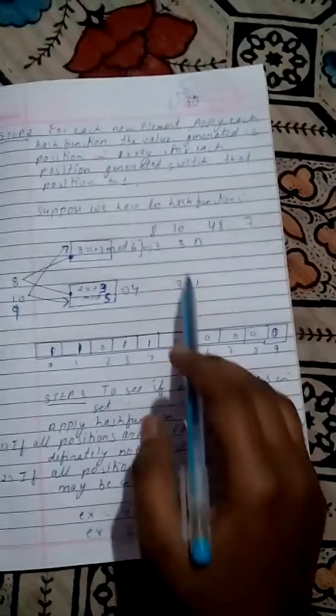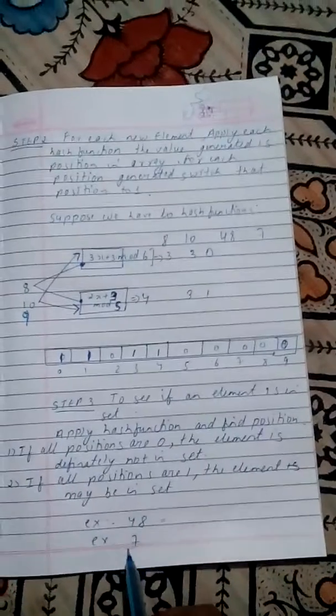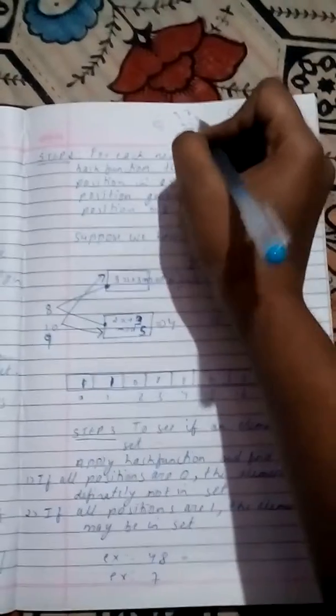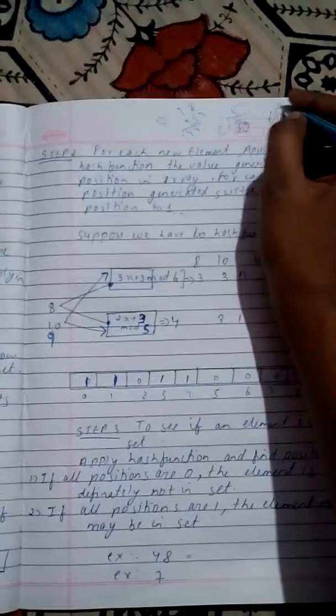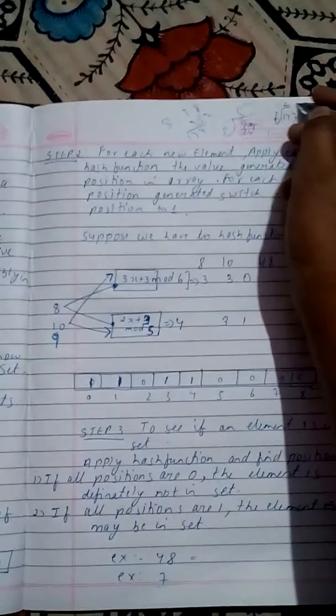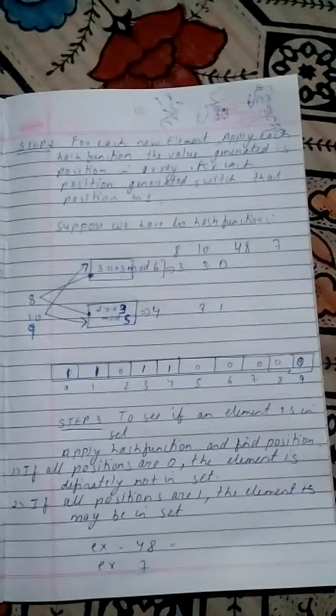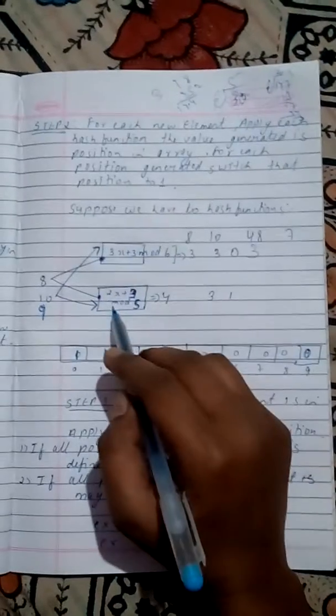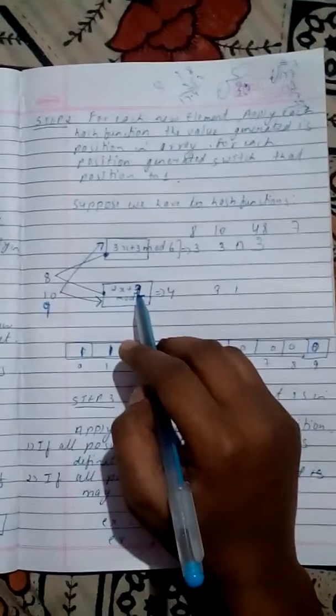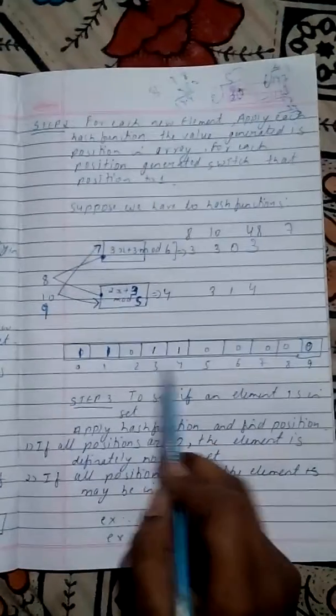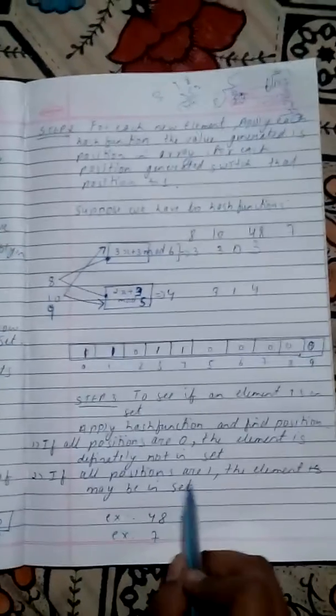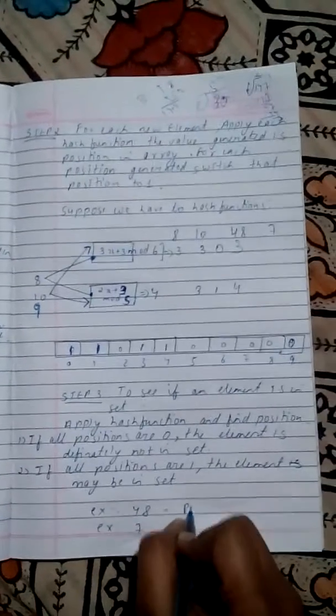Now I will tell you why we have taken 48 and 7. For 48, 3 times 48, that is 144. 144 plus 3 is 147. 147 divided by 6, we get 3. And 2 times 48 is 96, 96 plus 3 is 99. 99 mod 5 is 4. So 3, 4. 3 and 4 are 1 here, so this 48 is possibly in the set. If both are 1, then it is possibly in our set.